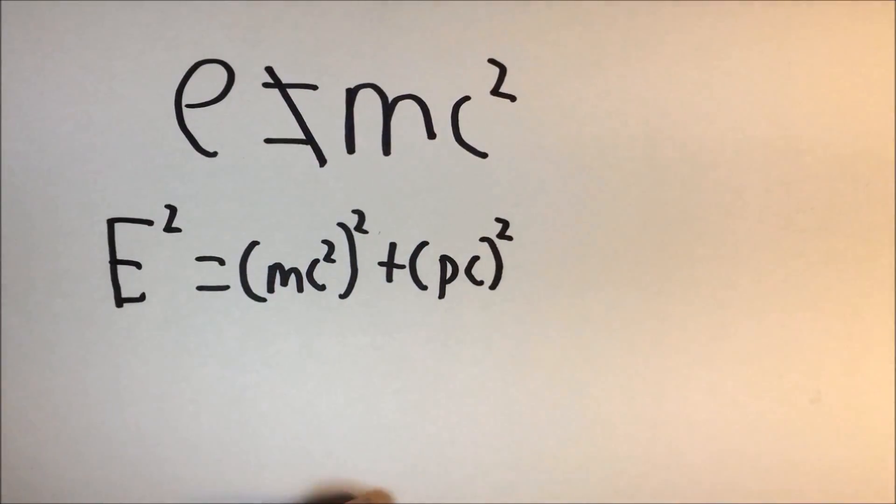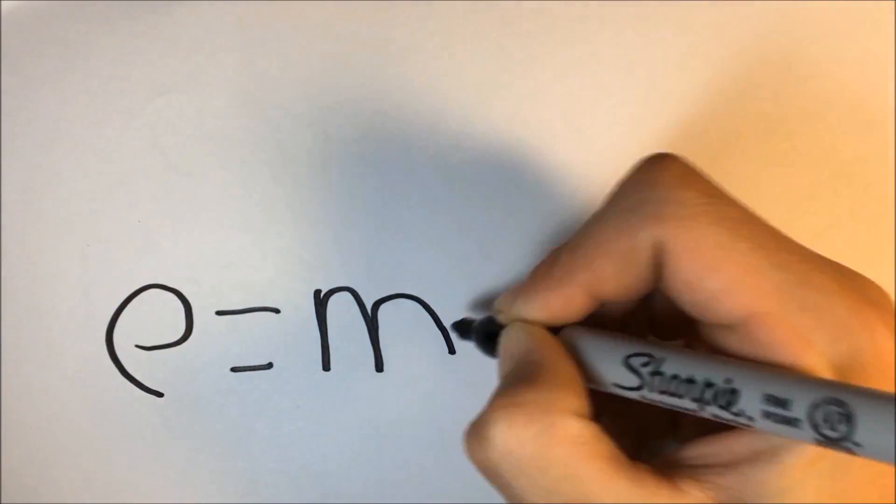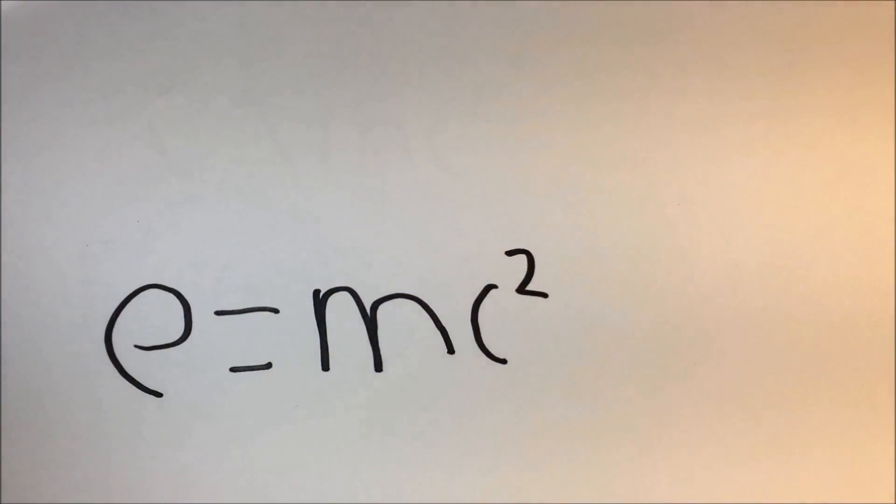Anyways, let's just assume E equals mc squared for simplicity sake. As you may know, black holes are full of energy, and because of E equals mc squared, we know that energy equates to matter.